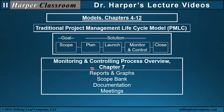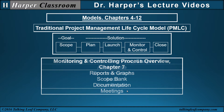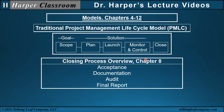In the monitoring and controlling process overview, Chapter 7, here's where the reports and graphs of the plans and baselines are produced, along with the scope bank, documentation from communications, and meetings. And finally, closing the process, Chapter 8, where we have acceptance, the documentation, audit of the project success, audit of the project process, and then the final report.